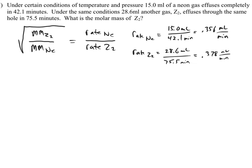All right. Now I'm going to plug that into my equation. I'm going to take 0.356 milliliters per minute. It's very important that these are the same units. It doesn't matter if it's milliliters per minute or gallons per second, as long as both units are the same. Then they'll cancel out over 0.378 milliliters per minute.